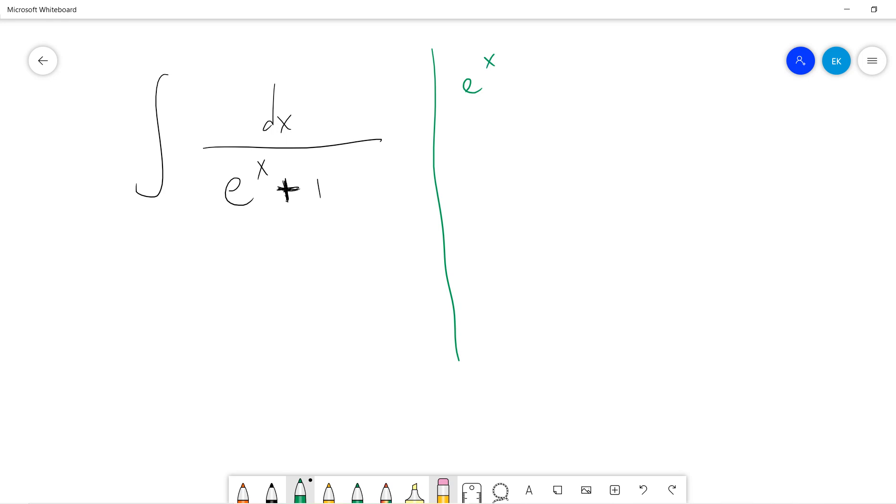So the idea is that I would, just for fun, let exponential x be u and check where we can get. So exponential x dx is du, right? So dx is du divided by exponential x.